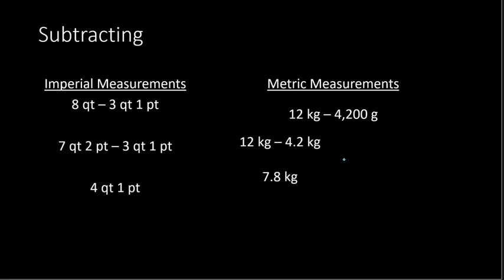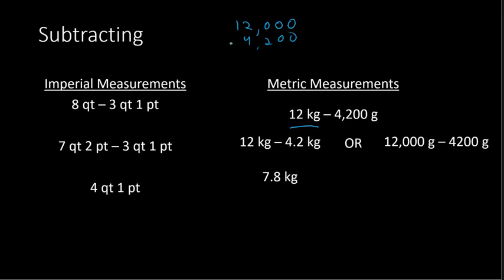The other way is converting 12 kilograms into grams. There are 1,000 grams in a kilogram, and going from larger to smaller units we multiply. So 12 times 1,000 gives 12,000 grams. We have 12,000 grams minus 4,200 grams. Subtracting: borrowing from the 2 makes it a 1, so 10 minus 2 is 8, and 11 minus 4 is 7, giving 7,800 grams. Both answers are the same thing in different units — 7.8 kilograms equals 7,800 grams.